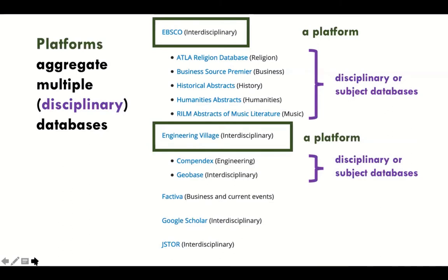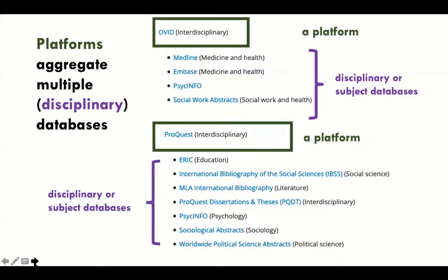Another term you'll find in the PRISMA search extension is 'platform.' Platforms aggregate databases, and most of those end up being disciplinary databases. So EBSCO is a platform, Engineering Village (EI) is a platform, and subject databases live inside the platform. Here is another set: Ovid is a fantastic platform for searching most of our healthcare databases, and ProQuest is a very powerful interdisciplinary platform for searching everything from education to sociology, with psychology in between.